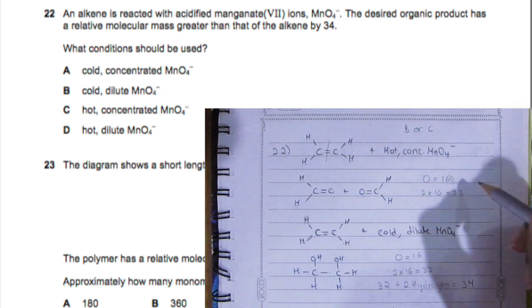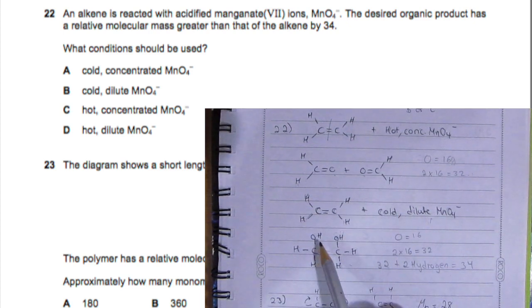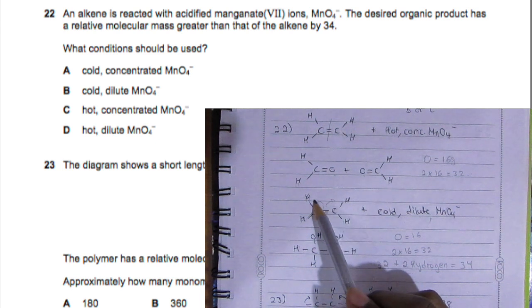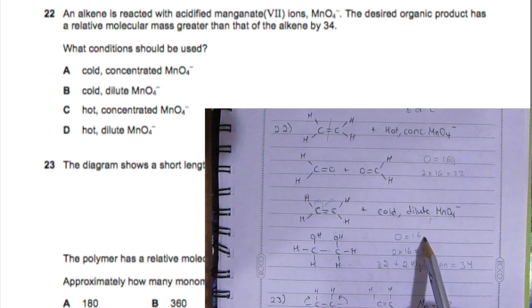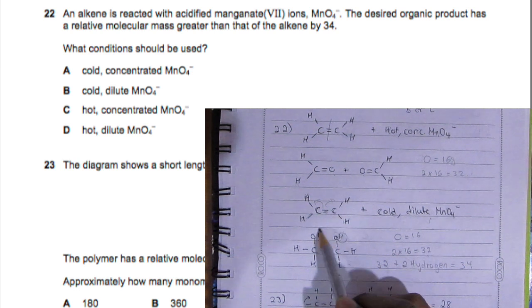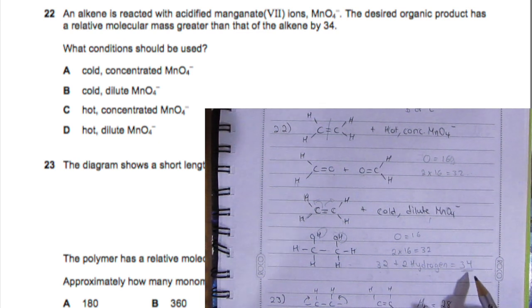Here though, with the cold dilute, it gives you an OH and an OH. It will open up, so OH and OH. Get two of these which is 32 plus hydrogen and hydrogen, so 32 plus the two hydrogens gives you 34. Which one increased by 34 is the cold dilute, so B is your answer.